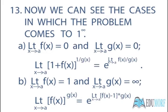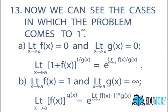Thirteenth, we consider the cases in which the problem comes to 1 raised to the power infinity. 1 raised to the power something is 1, but here it's not exactly 1 — it is tending to 1, raised to the power something tending to infinity. Therefore, 1 raised to the power infinity is an indeterminate form, and hence we use limits to solve such functions.